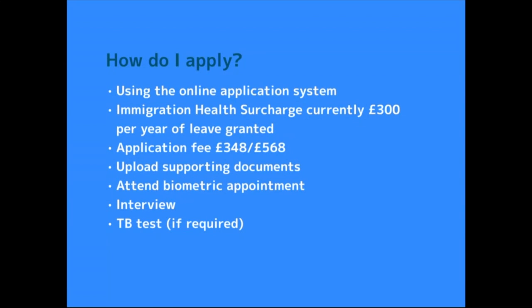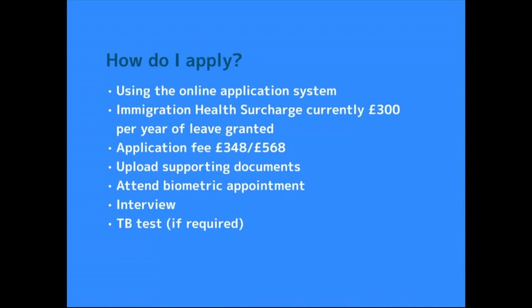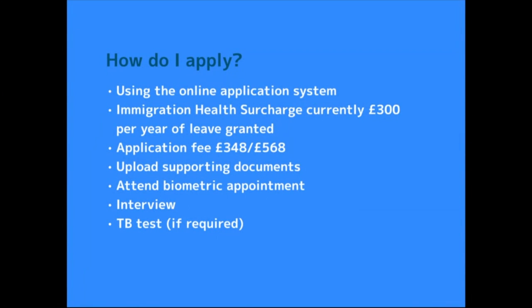The priority or premium service will cost £568 and aims to get your visa processed within five working days. For those running out of time, that's a good option, but ideally you plan well in advance to use the standard 15-day service. You'll also need to upload your supporting documents, and you'll have to attend a biometric appointment where you give your fingerprint data and a photo of yourself, so that information can be used on your biometric residence permit.